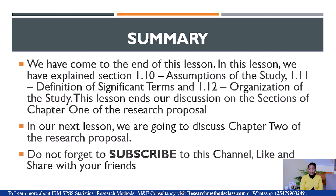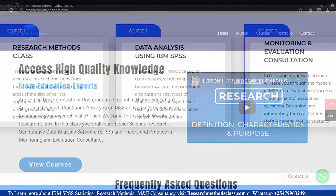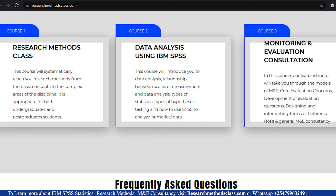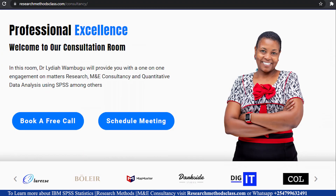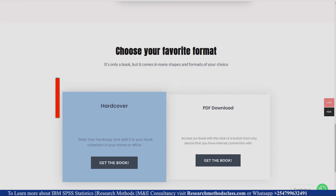This brings us to the end of our lesson and the end of the sections of Chapter 1 of the Research Proposal. We have discussed all 12 sections of chapter one, with this lesson covering the last three: assumptions of the study, definition of significant terms, and organization of the study. In our next lesson, we will start discussing chapter two of the research proposal. Make sure you visit researchmethodsclass.com to watch the full research methods course, access courses on SPSS and M&E consultancy, book for consultation, and purchase the research methods ebook.